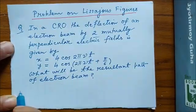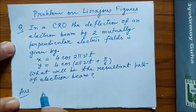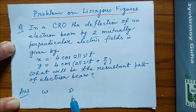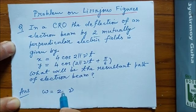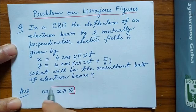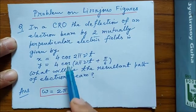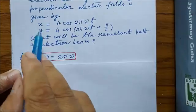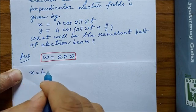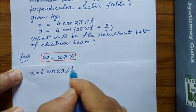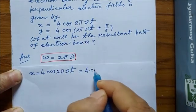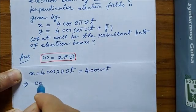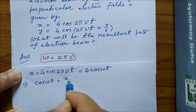We start with the answer, noting that the relation between angular frequency ω and the linear frequency ν is given by the well-known relation ω equal to 2πν. Let us rewrite these equations with the help of the angular frequency. So x equal to 4 cosine ωt.